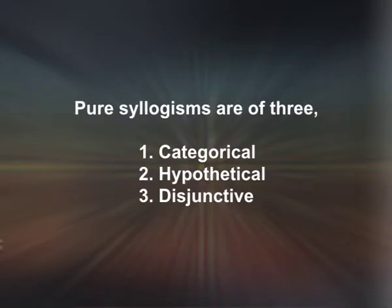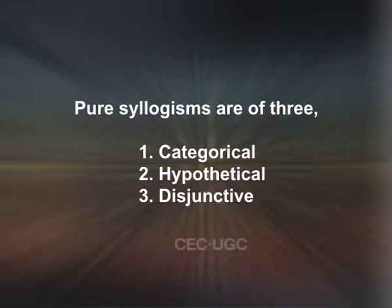Accordingly, a syllogism may be pure or mixed. A pure syllogism consists of propositions of the same kind, whereas a mixed syllogism consists of propositions of different kinds. Pure syllogisms are of three types: categorical, hypothetical, and disjunctive.